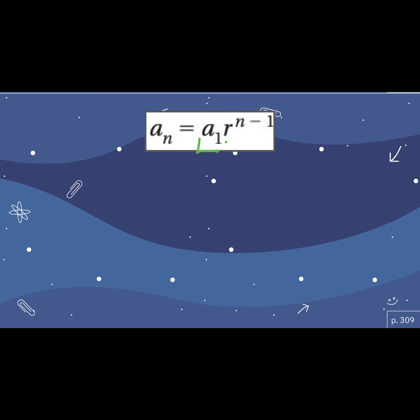So again, a sub 1 is our first term, and r is our common ratio. That's it. We just need to be able to write equations with this — find our first term and our common ratio.